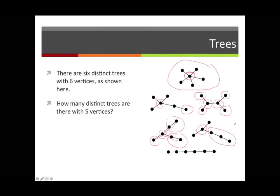And then finally what's left is to think about the possibility of having all vertices of degree 1 or 2, in which case you're forced to draw just a long chain like the one that I've shown here. So there are six possible trees with six vertices.